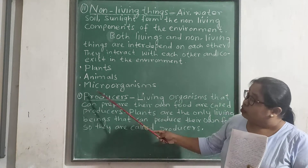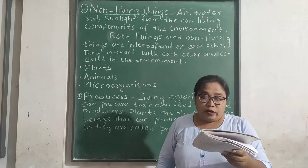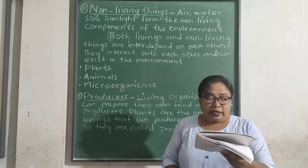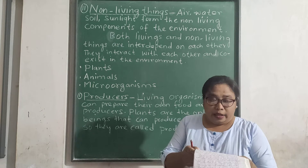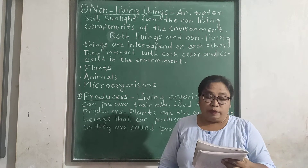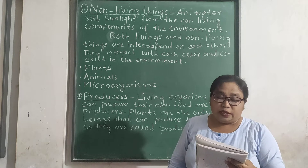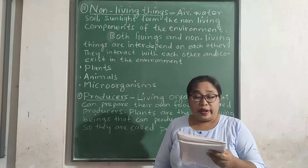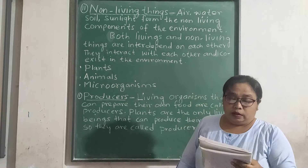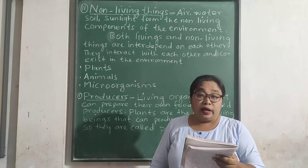Now let us discuss on micro-organisms. Micro-organisms are small living things that we cannot see with our naked eyes — we need special equipment like a microscope to see them. These micro-organisms grow in dead remains of plants and animals. They mix with the soil and provide nutrients, making the soil fertile for plants to grow. Examples of micro-organisms are fungi, bacteria, etc.